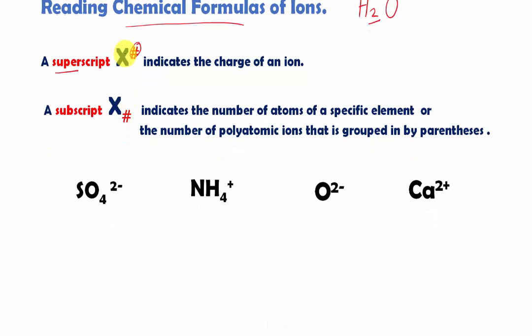Here I have a generic element symbol, X, and here I have the superscript flying above up there. Now, that number up there, or a superscript, indicates the charge of an ion. And we talk about that later.